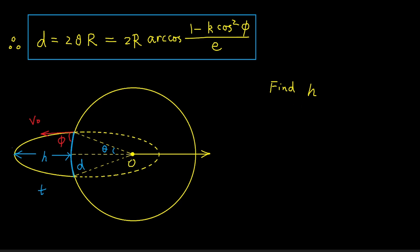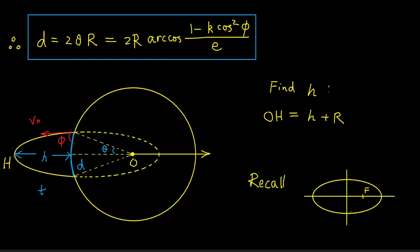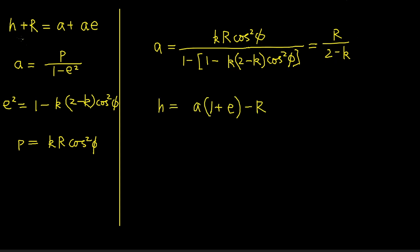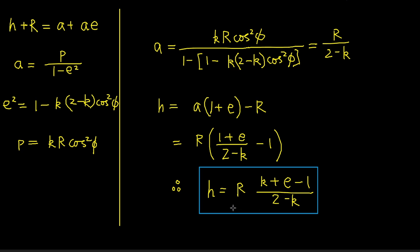We now find h, the height of the apogee. The distance from the planet's center O to the apogee is h + R. Since O is a focus of the ellipse, and a focus lies on the major axis at distance ae from the center of the ellipse (where a is the semi-major axis), the distance from O to the apogee is also a + ae. The semi-major axis a = p / (1 − e²) = r / (2 − k). So h = a(1 + e) − r, which simplifies to h = r · (k + e − 1) / (2 − k).